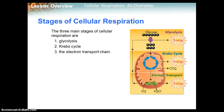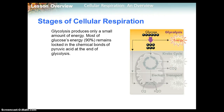The stages of cellular respiration include glycolysis first, the Krebs cycle second, and then the electron transport chain. We're going to talk about all three. First: glycolysis.